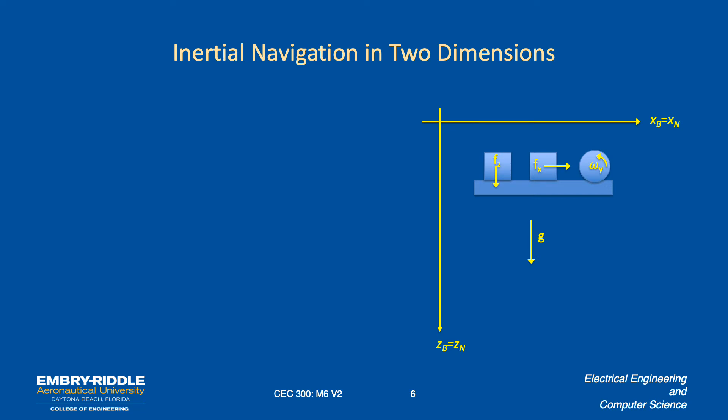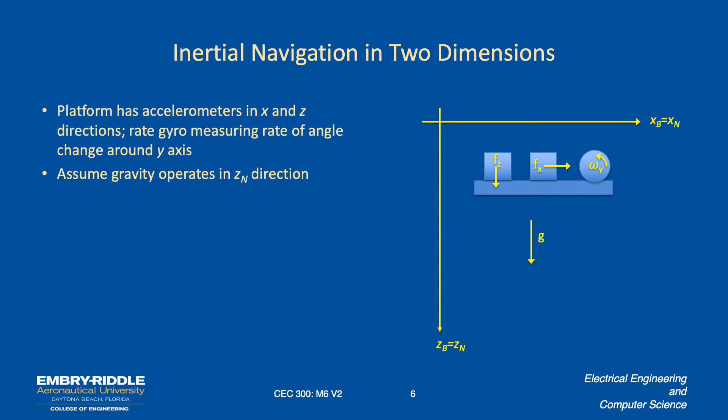And then we're measuring the rotation, the rate of pitch, actually, about the Y axis. And we have to take into account that there's a gravity vector, which is pointing down. So we've got the platforms. We've got the gyros. We've got gravity going down. We start at rest. And the body axes are aligned with the NED axis.